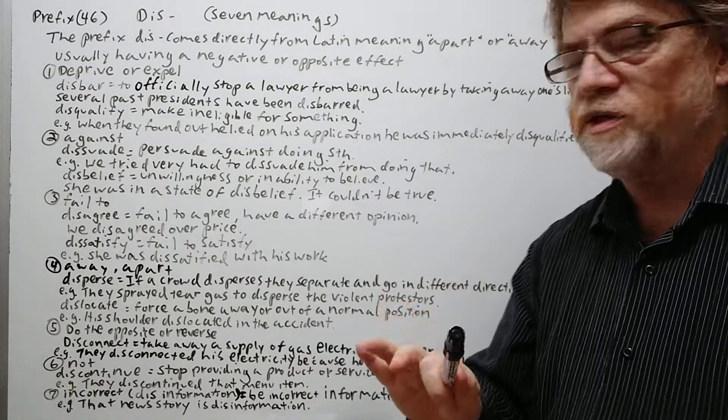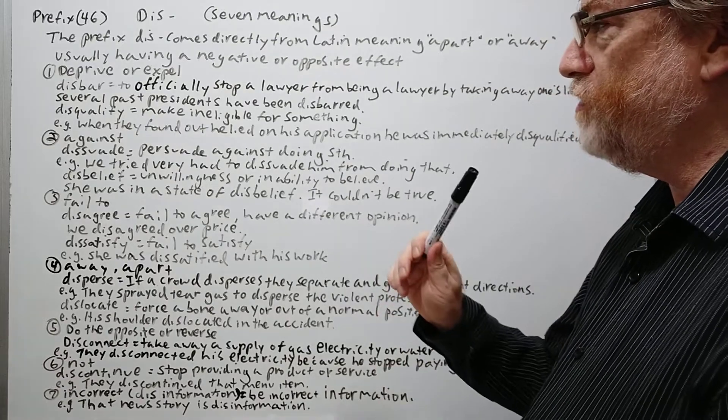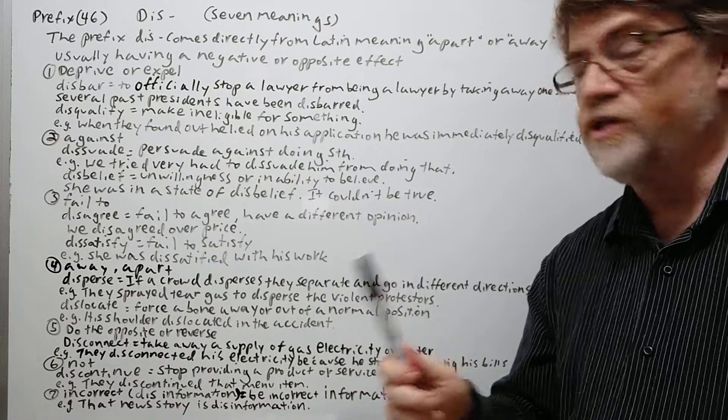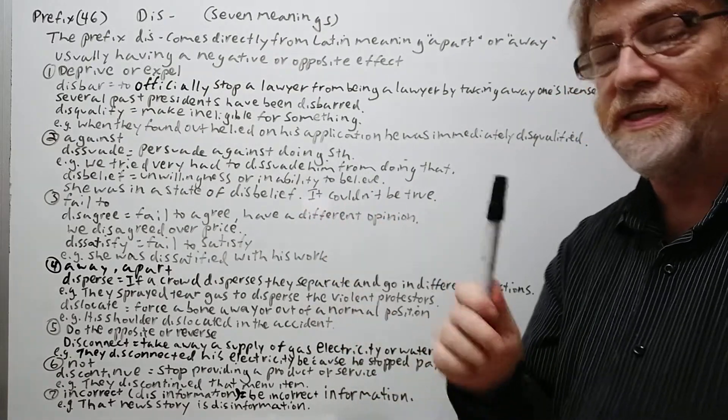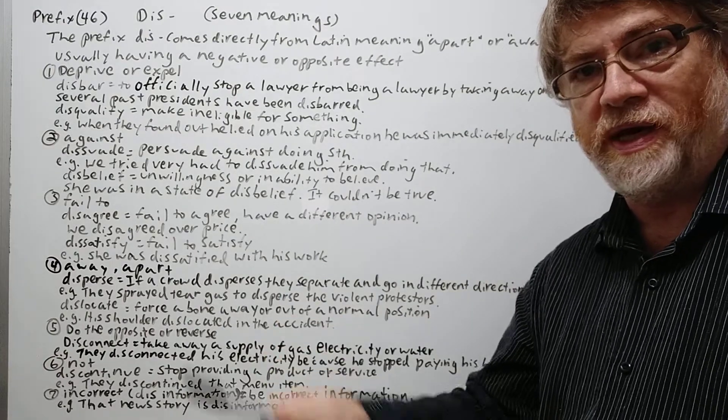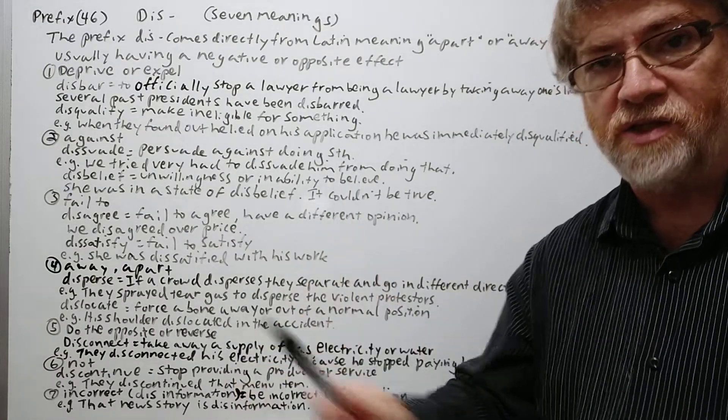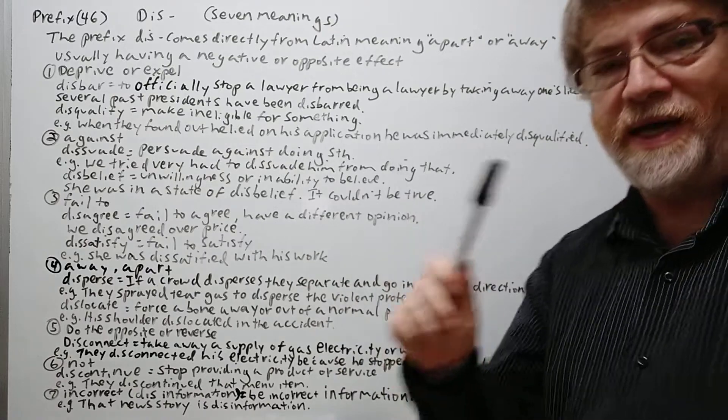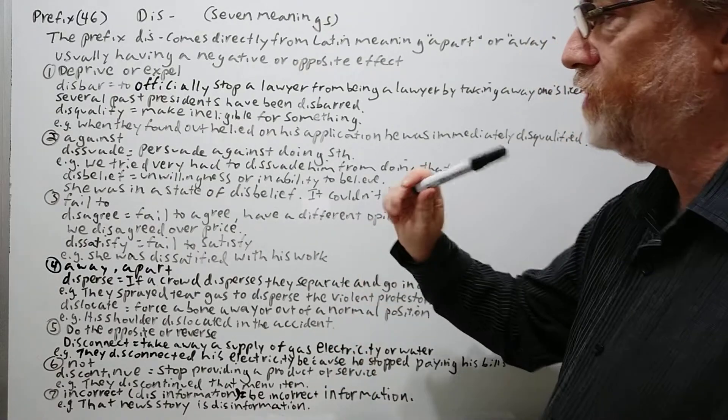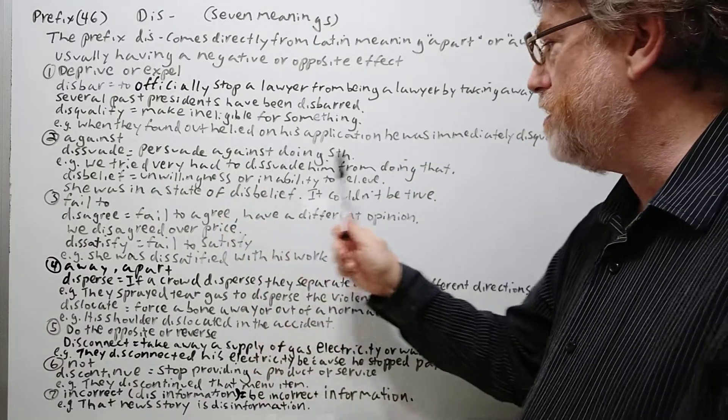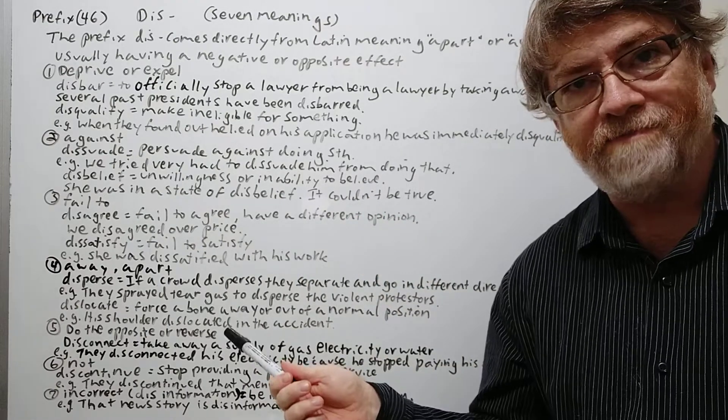The second meaning is more against. So to dissuade means to persuade against doing something—it's the opposite of persuade. It's probably really to persuade somebody not to do something or to persuade against. Here's our example: we tried very hard to dissuade him from doing that.